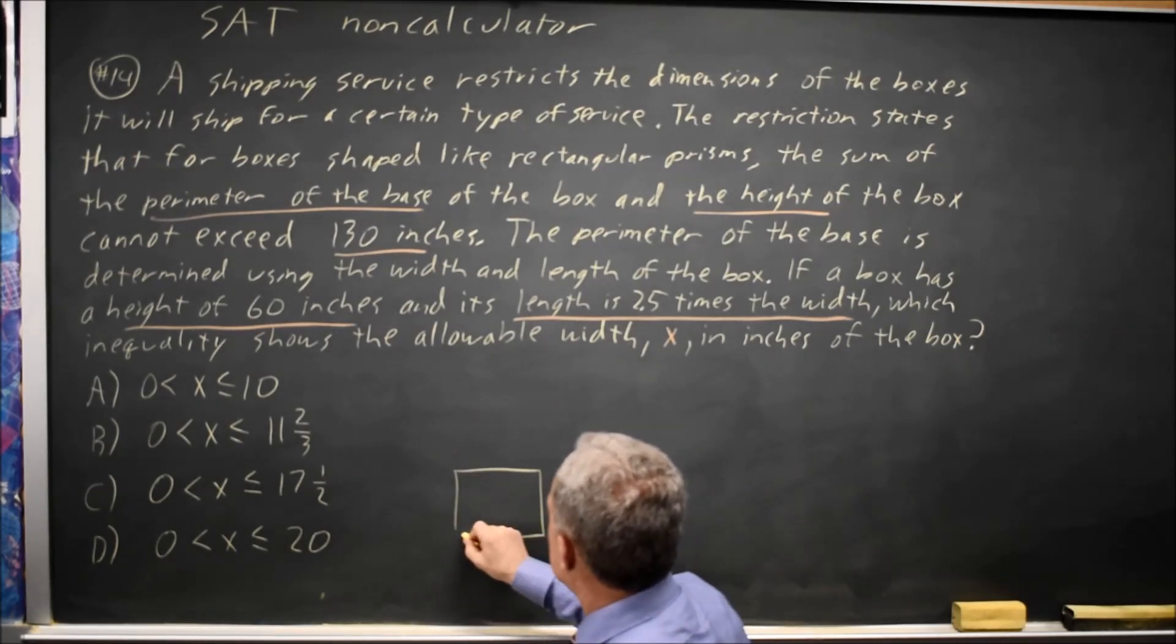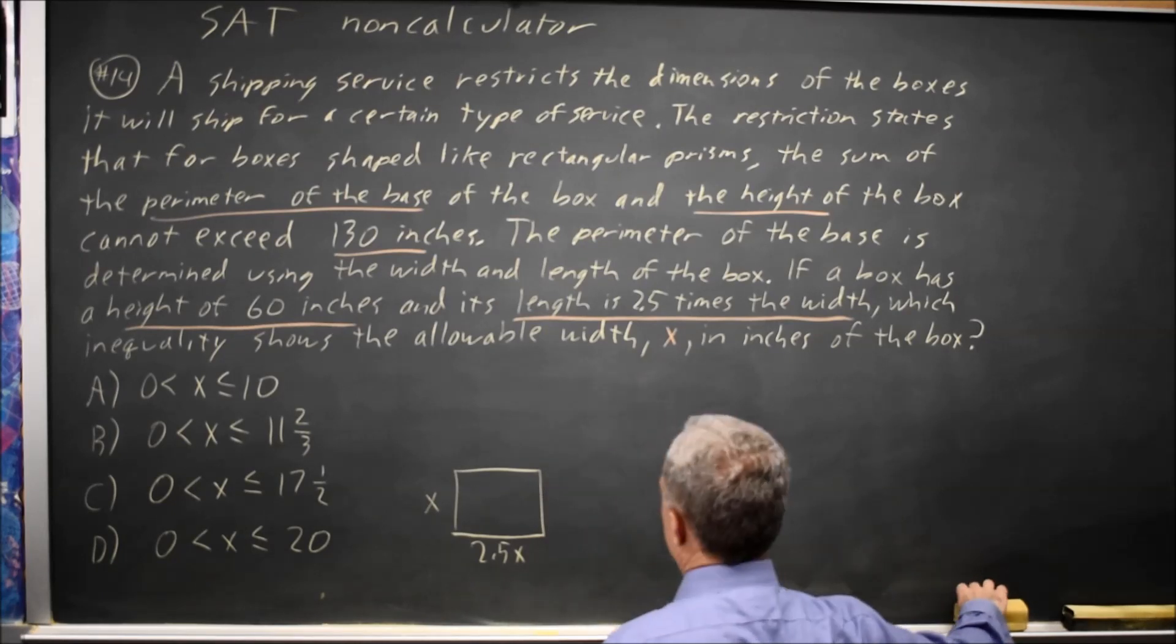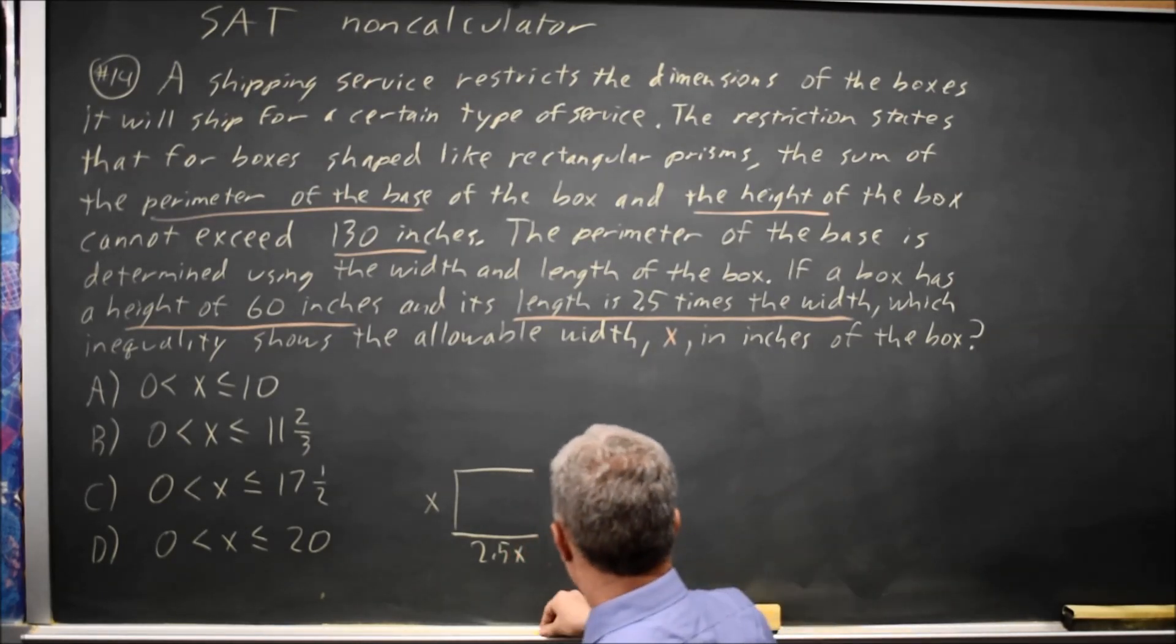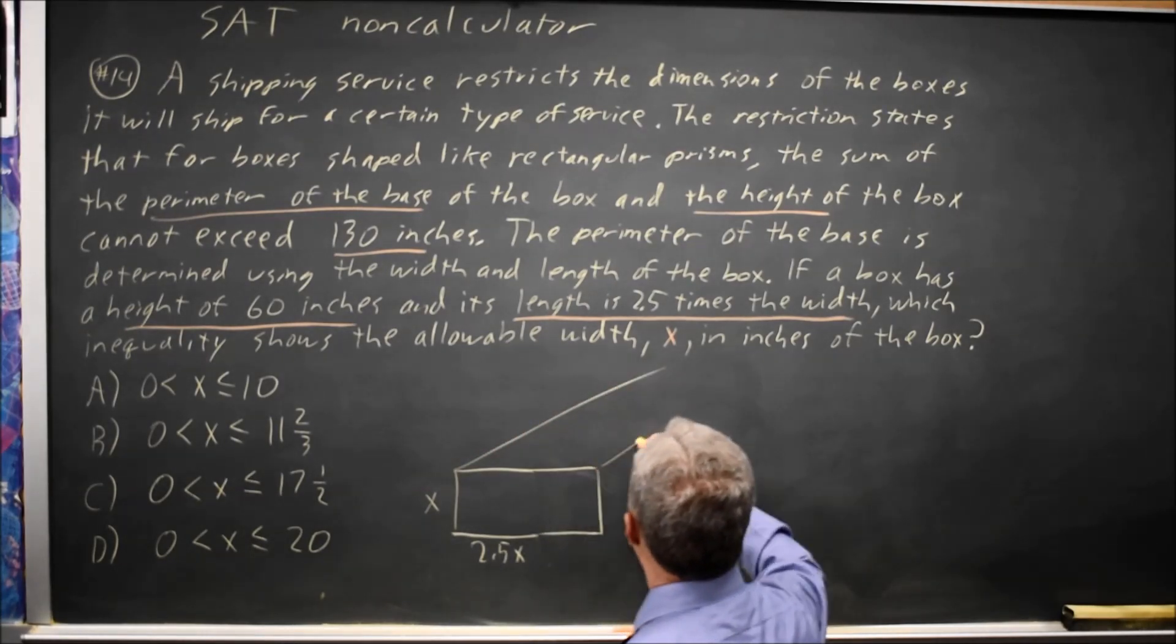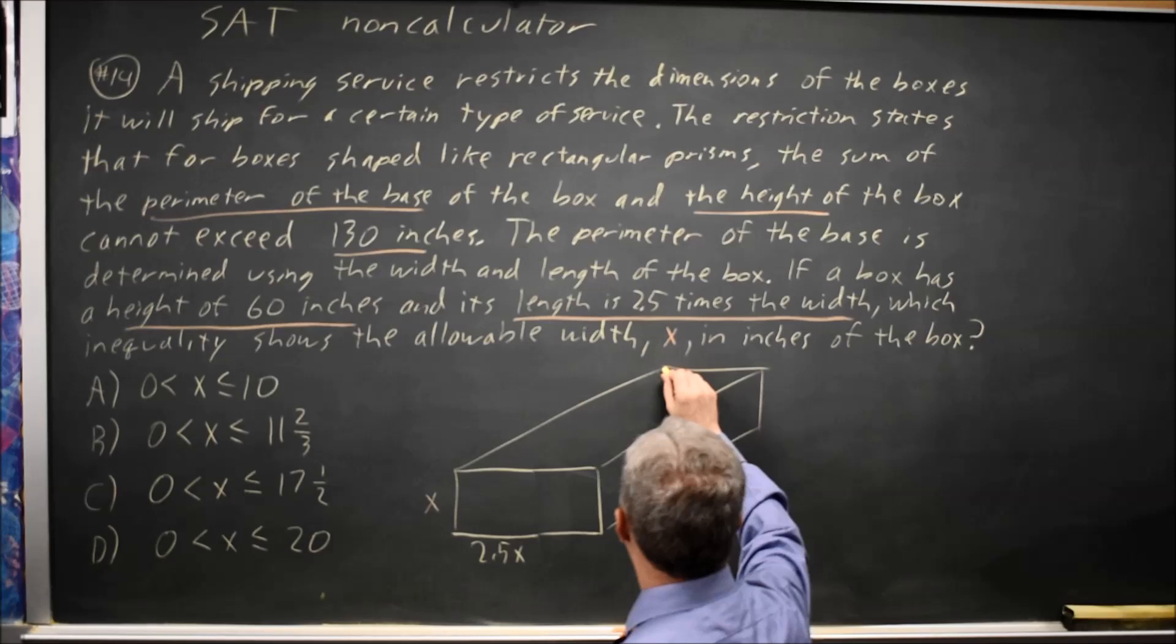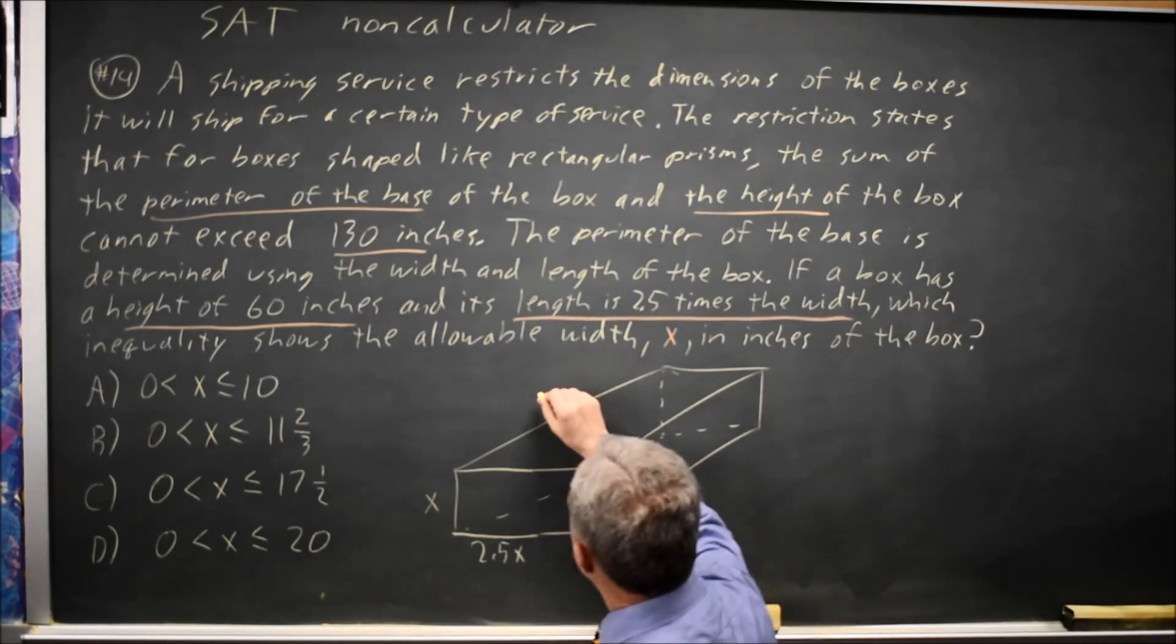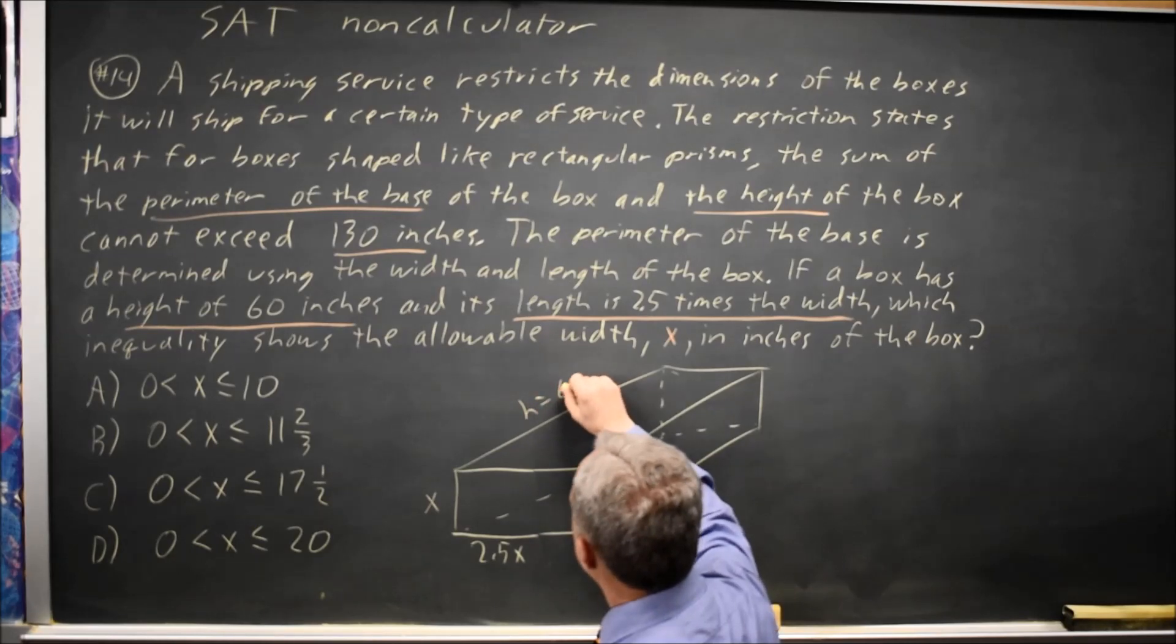Looking at the base this is x, this is 2.5x, I should make that a little more proportional. And then it's got its height where this is h equals 60.